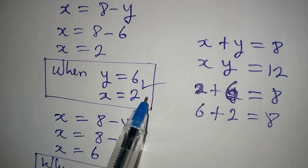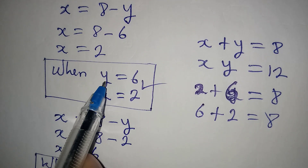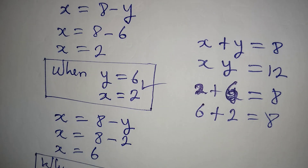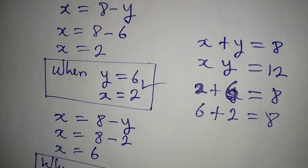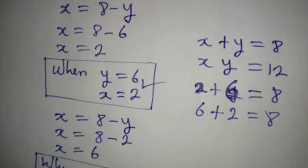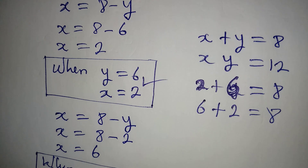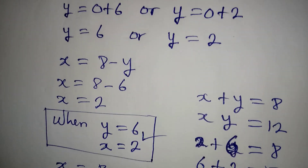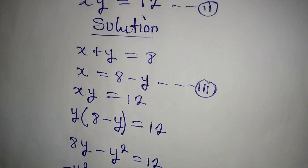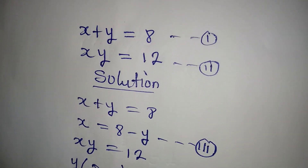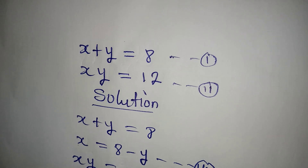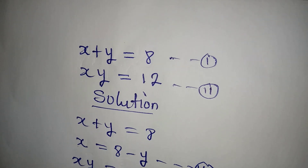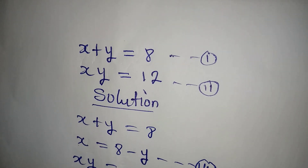This means both values of x and y are valid. Remember, if you stop at only one pair then you've done it halfway, because both pairs are real solutions to the equation. Thank you for watching.